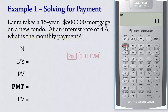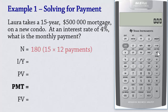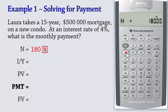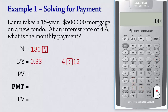We begin by pressing 2nd Clear Time Value of Money to clear previously done work. Since we have monthly payments for 15 years, there will be 15 times 12 payments, which equals 180 payments in total. So we input 180 N. For the interest rate, we divide 4% by 12 by pressing 4 divided by 12, which equals 0.33, and then press IY.